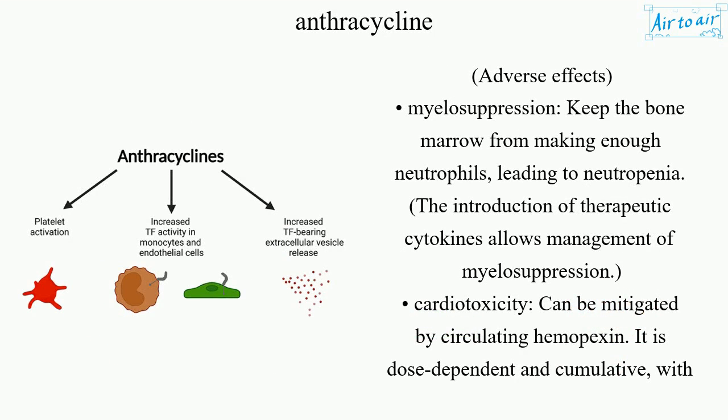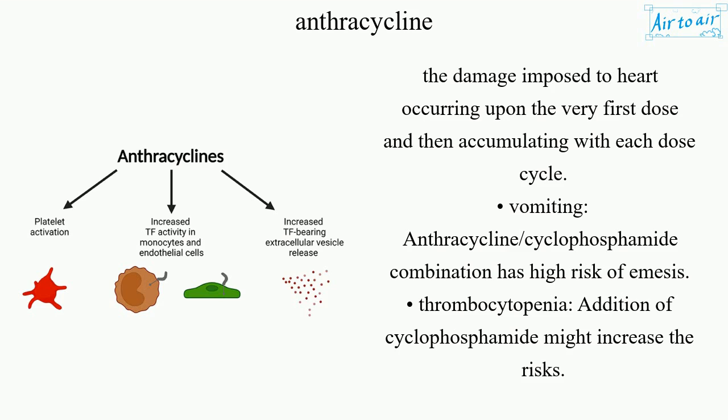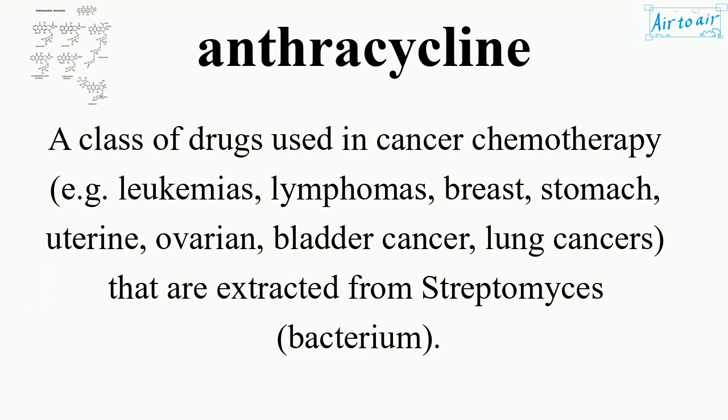Adverse effects. Myelosuppression: keeps the bone marrow from making enough neutrophils, leading to neutropenia. The introduction of therapeutic cytokines allows management of myelosuppression. Cardiotoxicity: can be mitigated by circulating hemopexin; it is dose-dependent and cumulative, with the damage imposed to the heart occurring upon the very first dose and then accumulating with each dose. Nausea and vomiting: the anthracicline-cyclophosphamide combination has a high risk of emesis. Thrombocytopenia: addition of cyclophosphamide might increase the risks.